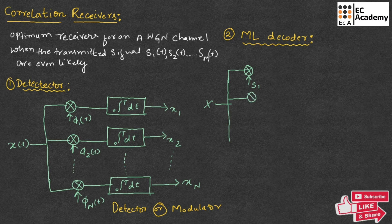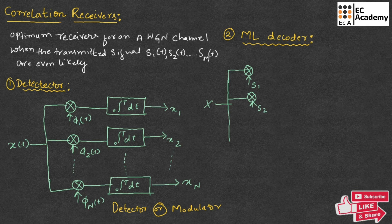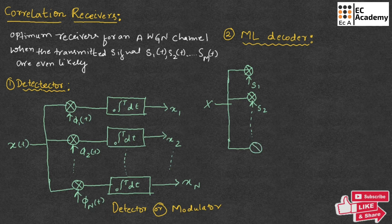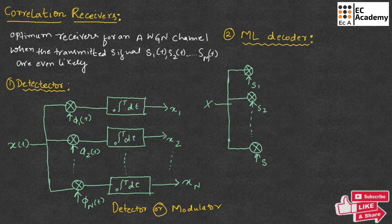which is S2, and so on, up to the last vector, which is S, M. So here the decoder will multiply the observation vector by corresponding M signal vector, S1, S2, and so on, up to S, M.